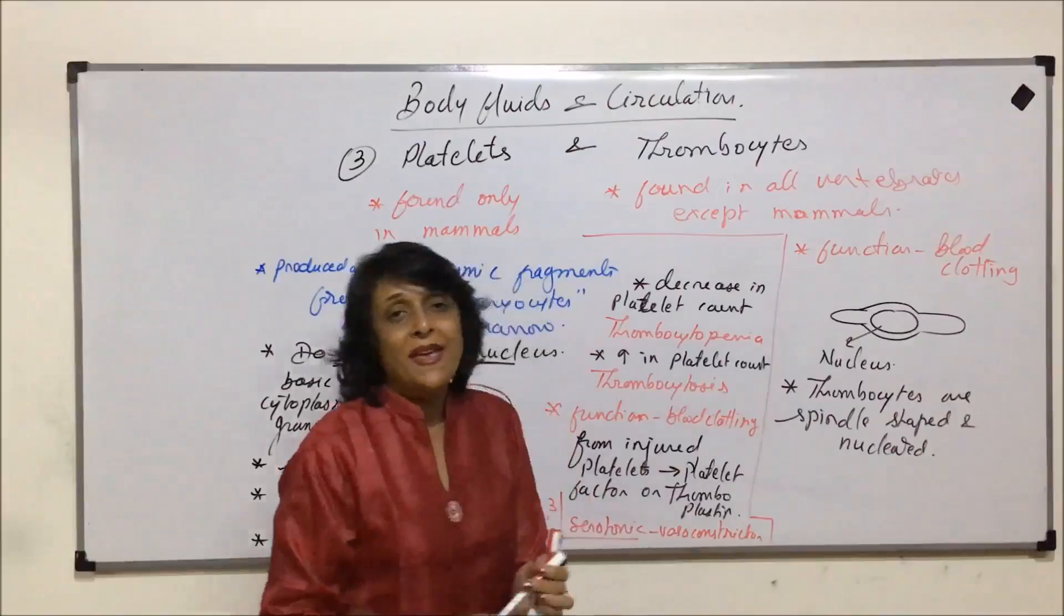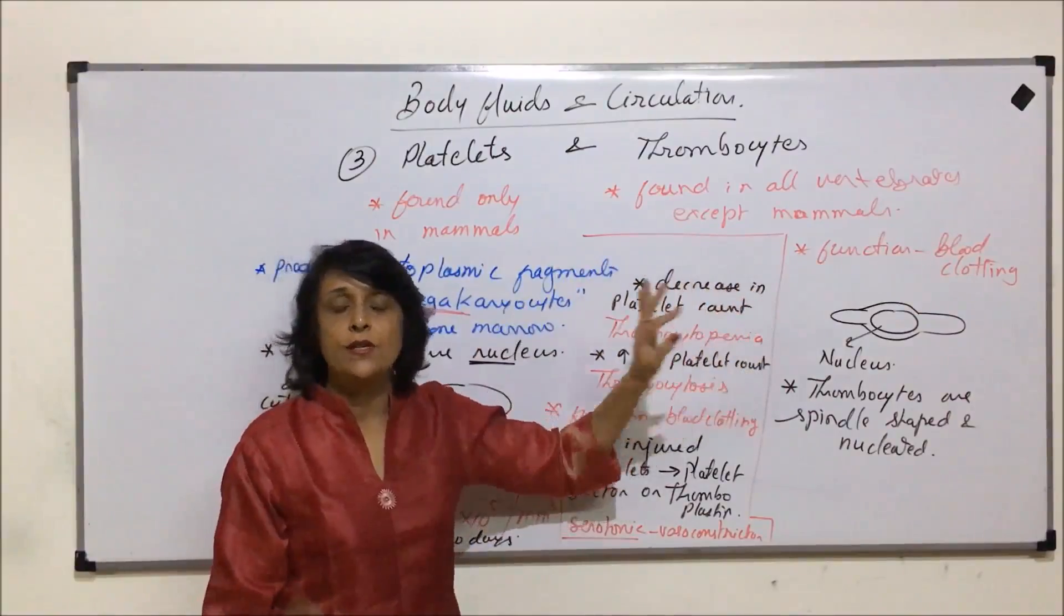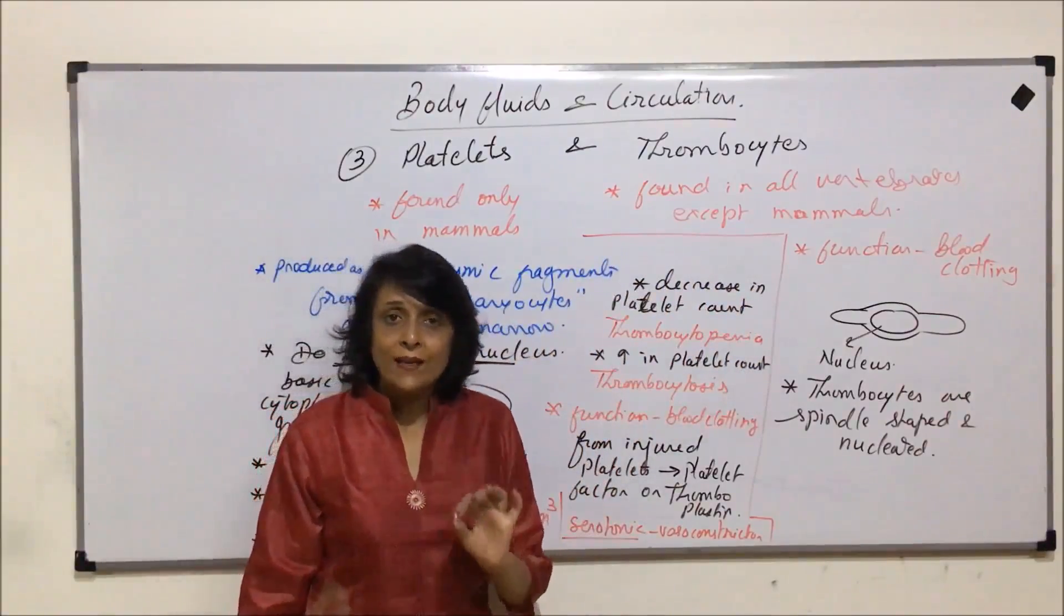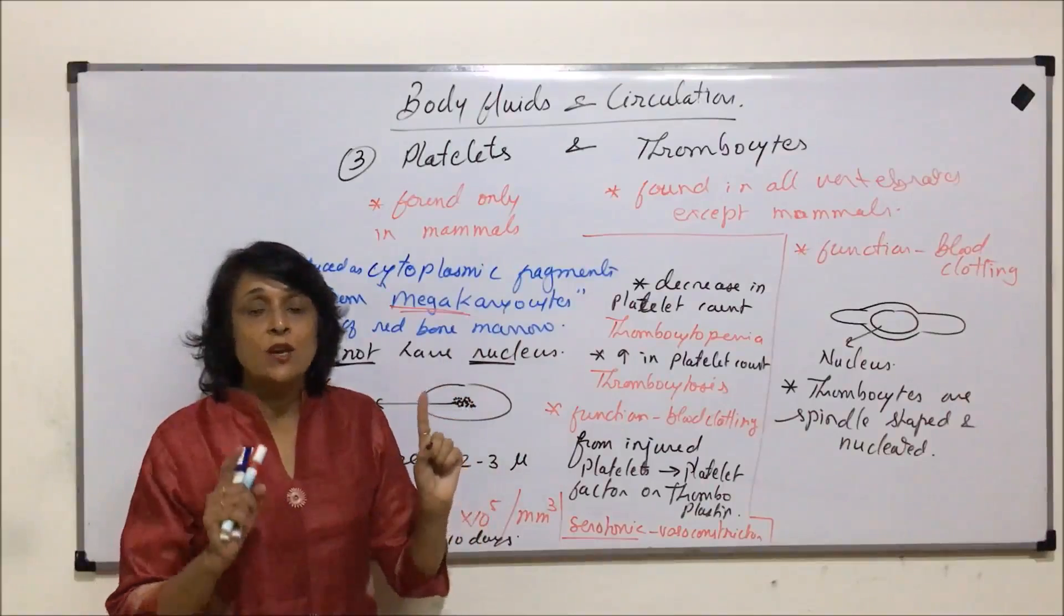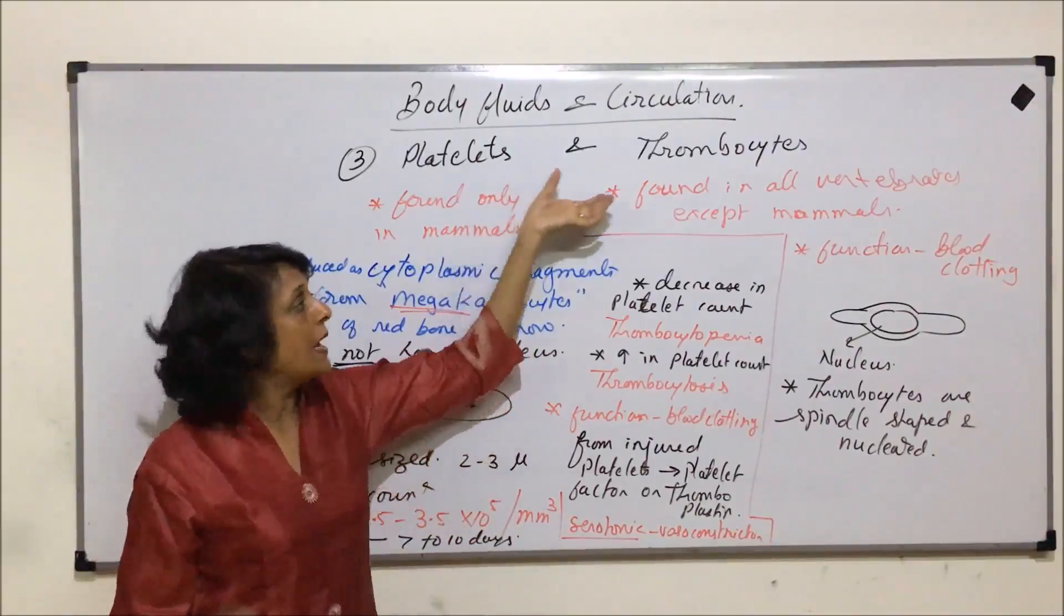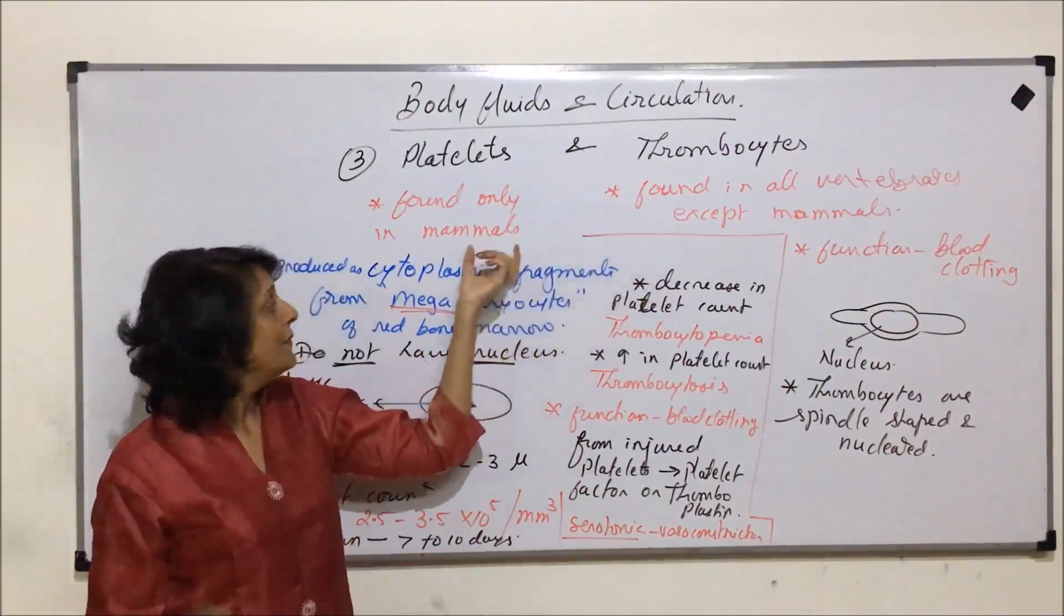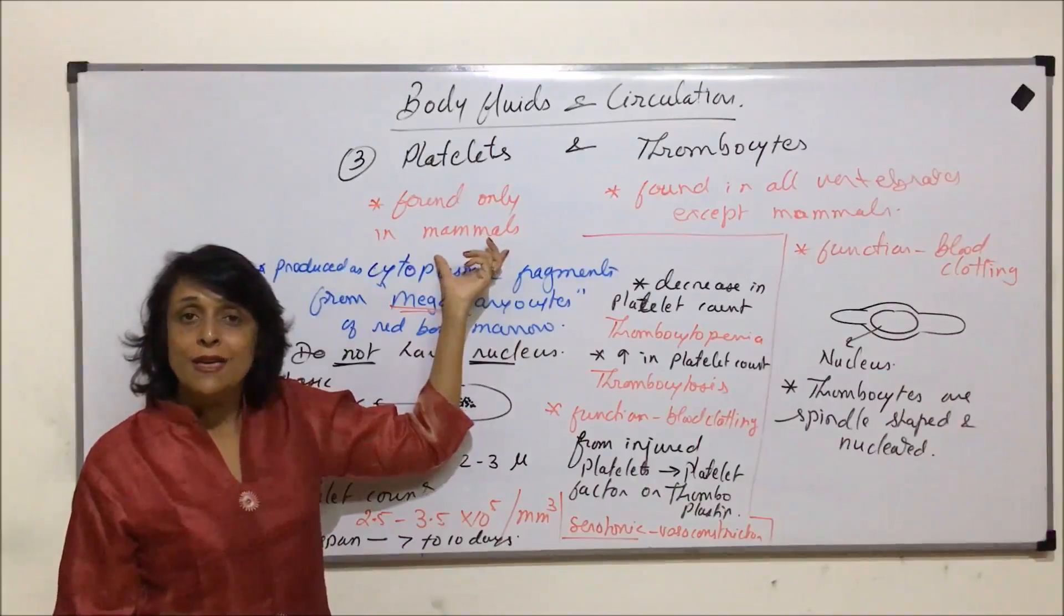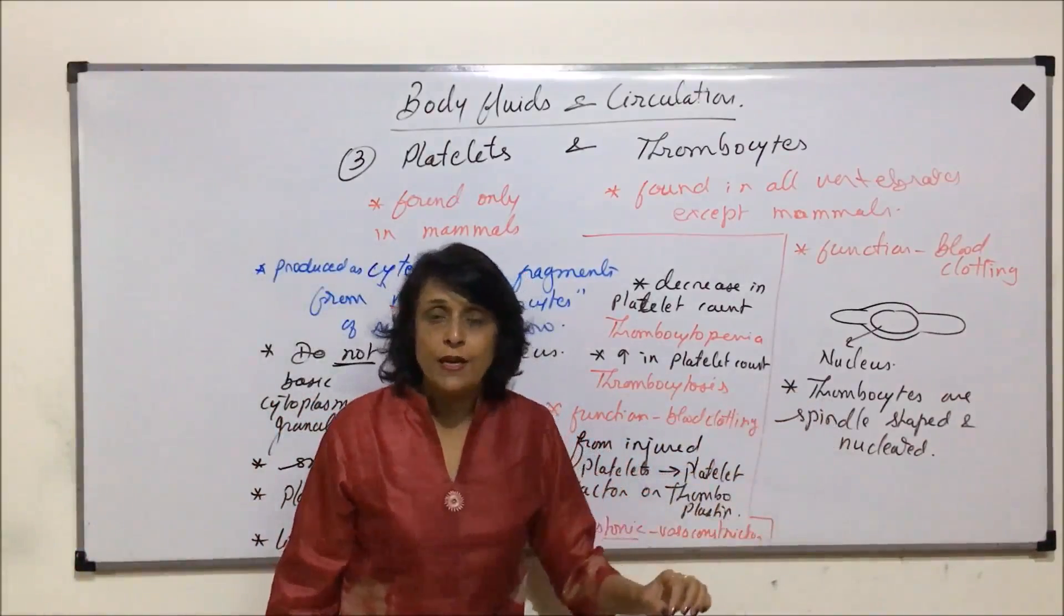So many times there is a confusion that platelets and thrombocytes are the same, but actually they are not. They are similar kind of cells which are doing the same functions. Platelets in mammals and thrombocytes in all vertebrates except mammals. These are non-nucleated cells or enucleated cells, whereas thrombocytes are nucleated. Though both help in blood clotting.